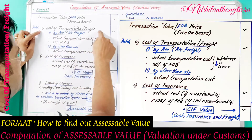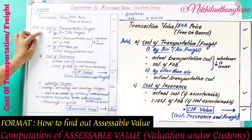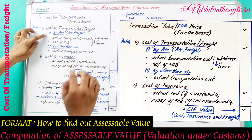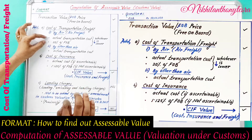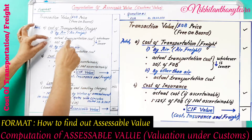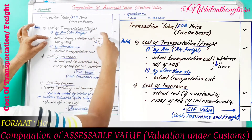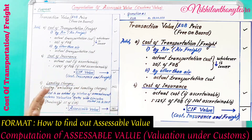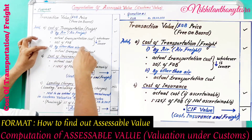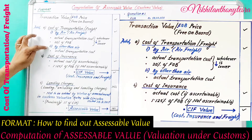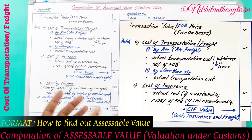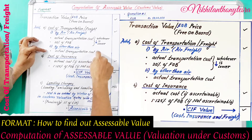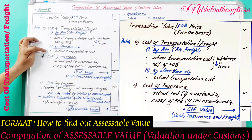Regarding cost of transportation or freight: if the mode of transport is by air, the actual transportation cost or 20% of FOB, whichever is lower, would be considered as the cost of transportation. If the mode of transport is other than air — such as ocean freight or any other freight — the actual transportation cost would be considered.